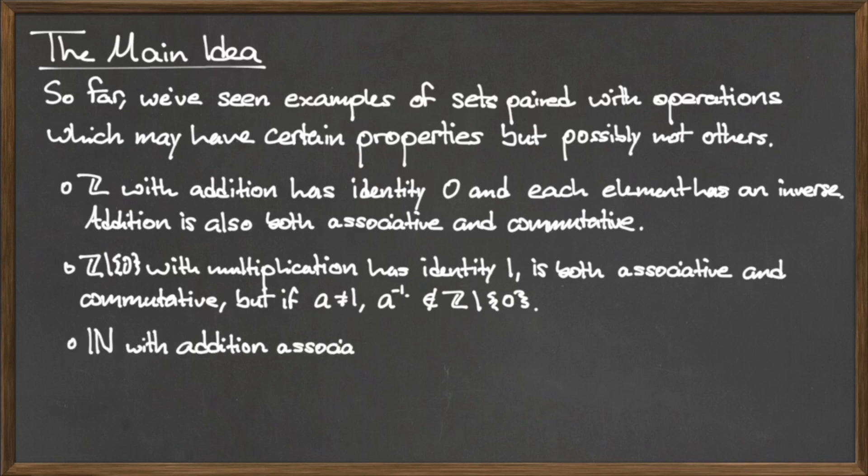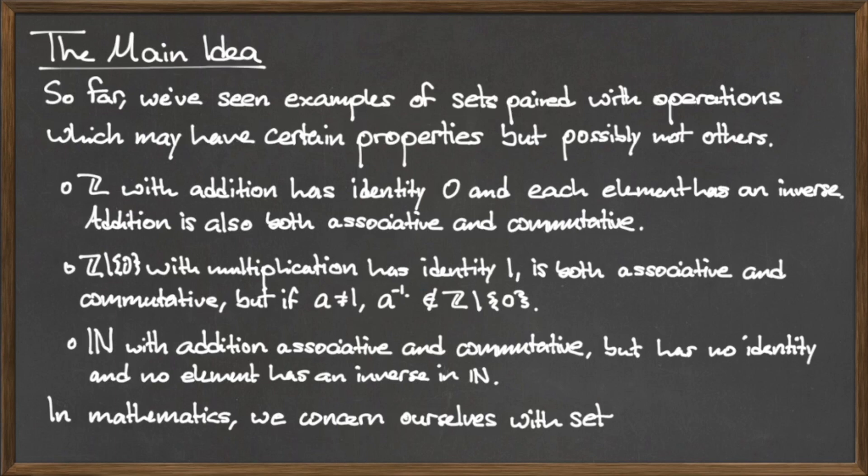Also, addition on natural numbers is both associative and commutative, but has no identity element and therefore no inverse elements.